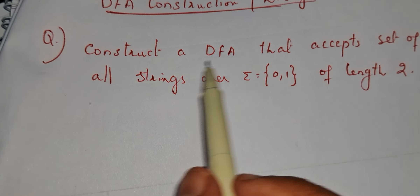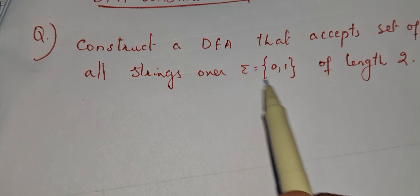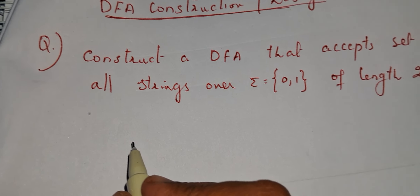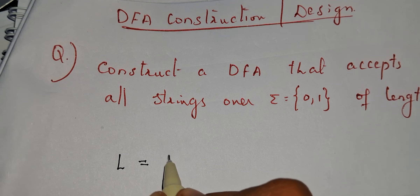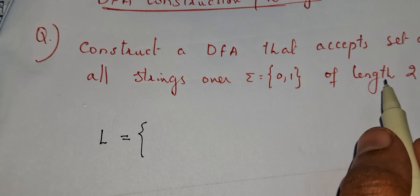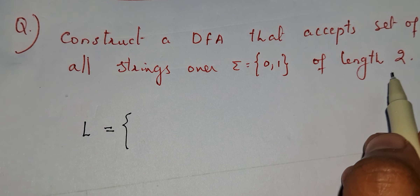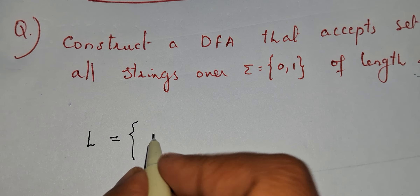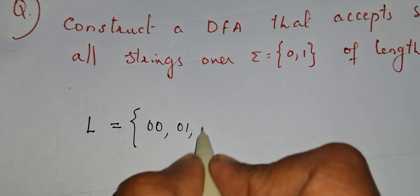Our problem is: construct a DFA that accepts the set of all strings over the input alphabet {0, 1} of length 2. Whenever you get a problem, first write the corresponding language. Our language is the set of all strings of length 2, generated using symbols 0 and 1.